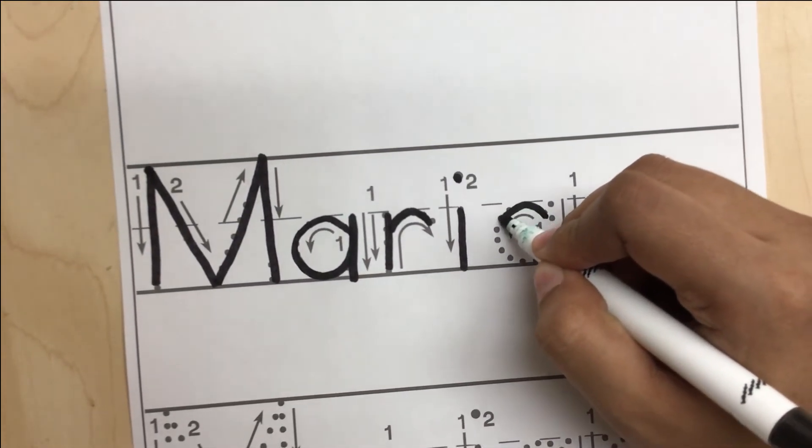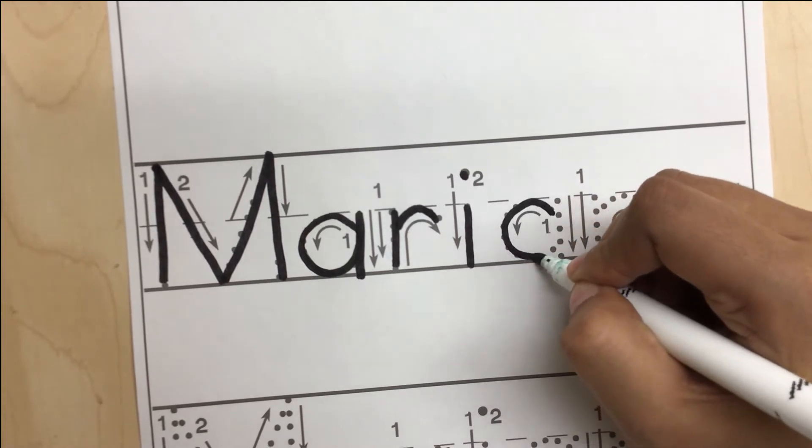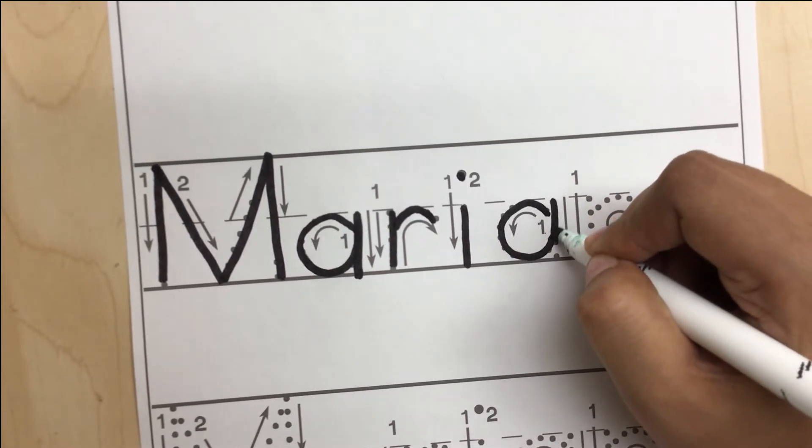Make a letter A. Pick up your pencil, start on the broken line and go down to the baseline.